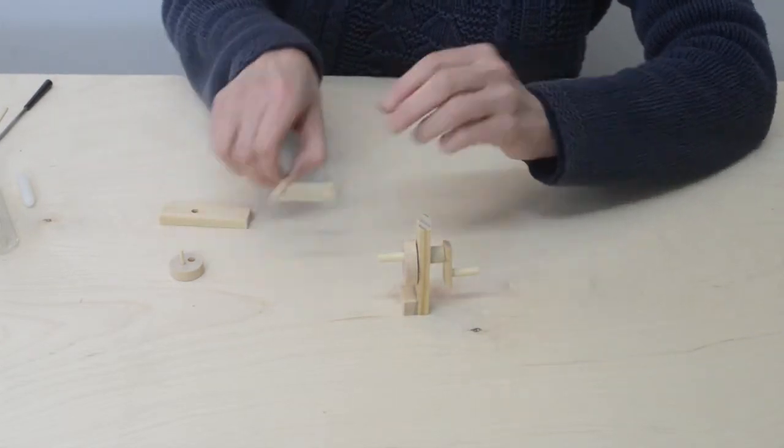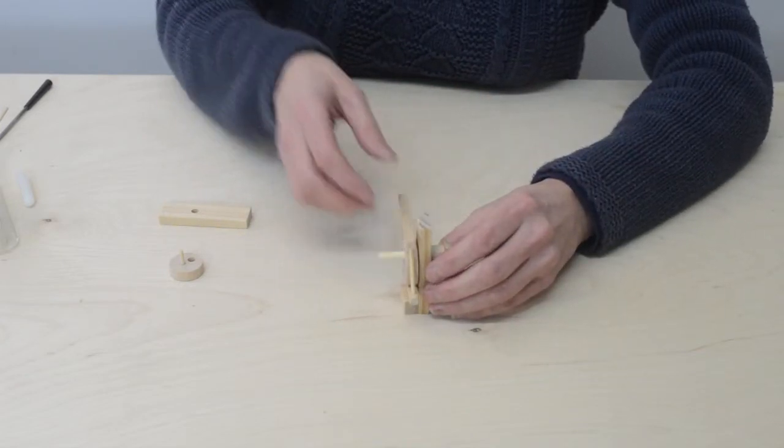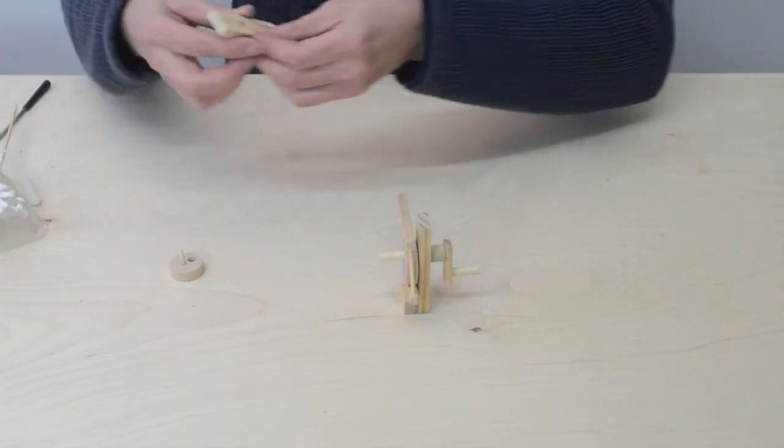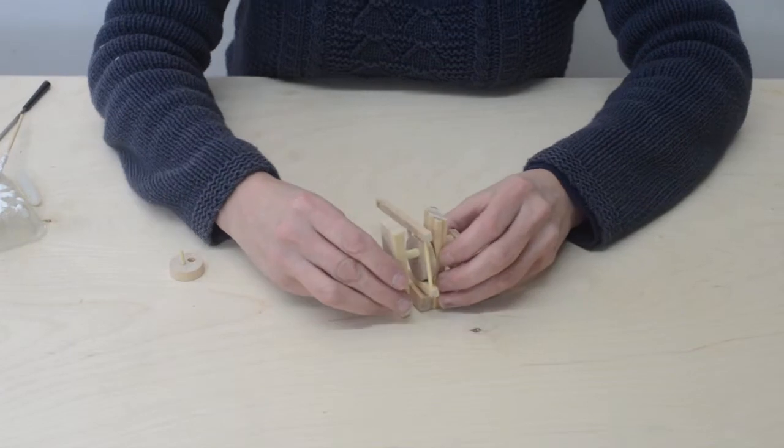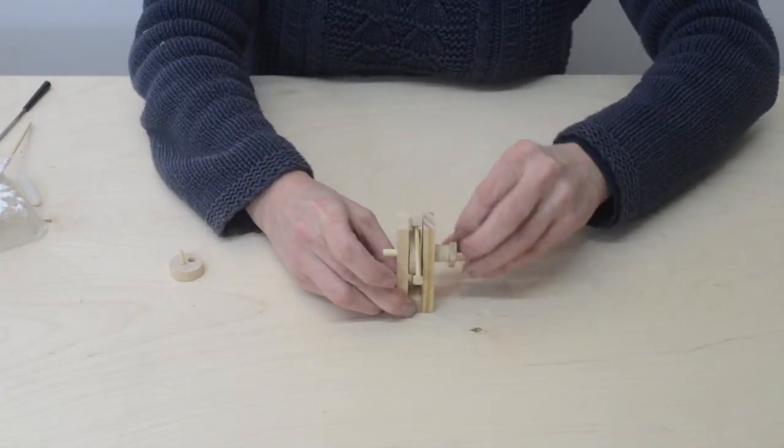Then you can do the next stage which is feeding on the cage that you've built and gluing on the other side. So there you have it.